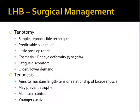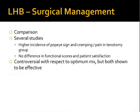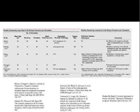The other option is tenodesis, where an effort is made to maintain the length-tension relationship of the biceps muscle, which is thought to prevent muscle atrophy and fatigue discomfort, as well as reducing cosmetic deformity. Several comparison studies have shown no difference in functional scores and patient satisfaction between tenotomy and tenodesis, but the tenotomy groups have a higher incidence of the Popeye sign and cramping or pain. There is no real consensus, and there remains a degree of controversy as to which is the best treatment. The table here highlights the main studies — many done in France — with the key finding that there's no real difference in function between groups but higher incidence of deformity with tenotomy.